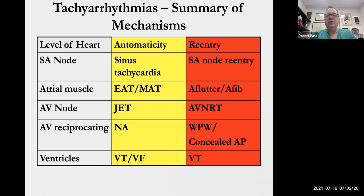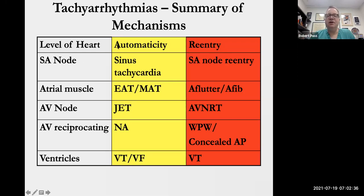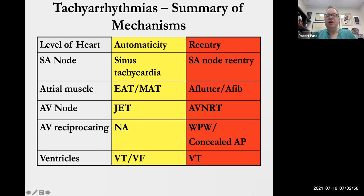We're going to start at the end of the last talk and segue into therapies. I apologize, it's going to be somewhat brief, as we were both a little busy this weekend. Just to remind you from the end of the talk, when we're talking about the mechanism of arrhythmias, I generally think of the level of the heart. When I'm looking at an ECG of an arrhythmia, in my mind's eye, I'm working from the top down, and I mechanistically divide them into automatic arrhythmias and re-entrant arrhythmias.